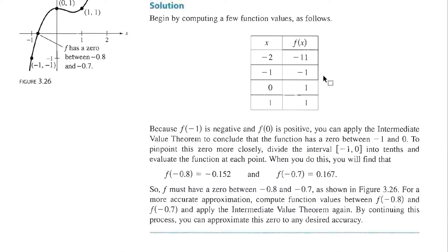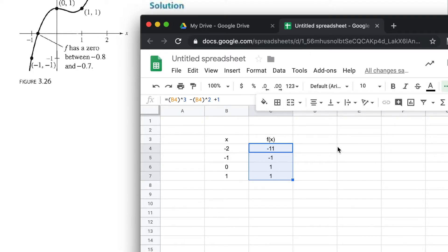Notice that's the exact same list here: -2 gives -11, -1 gives -1, 0 gives 1, 1 gives 1. I'll show you that's exactly what we have here.